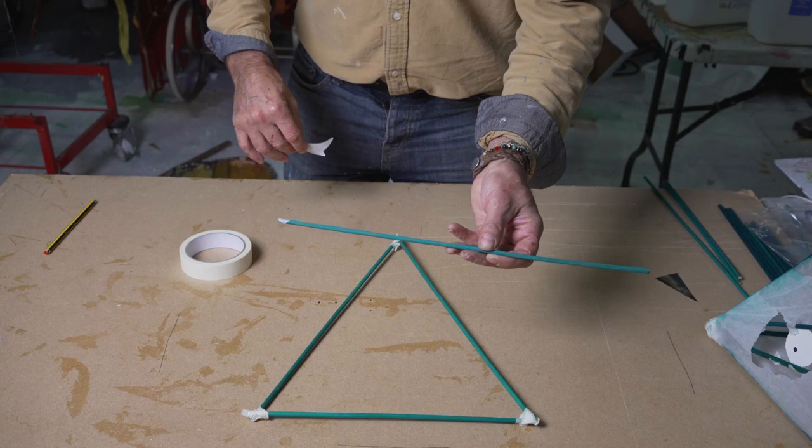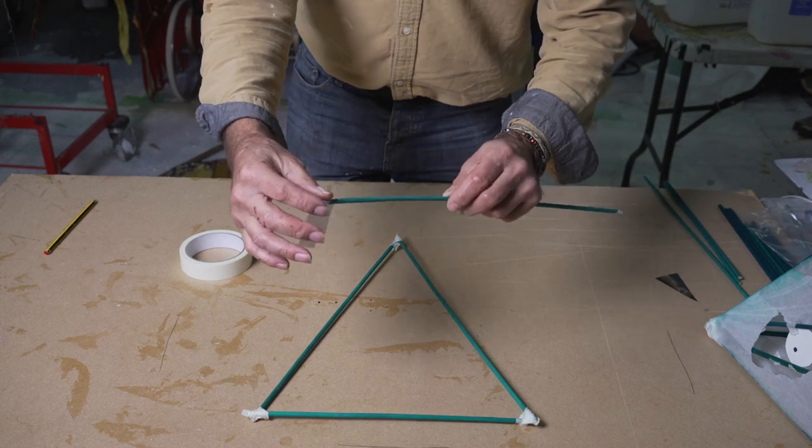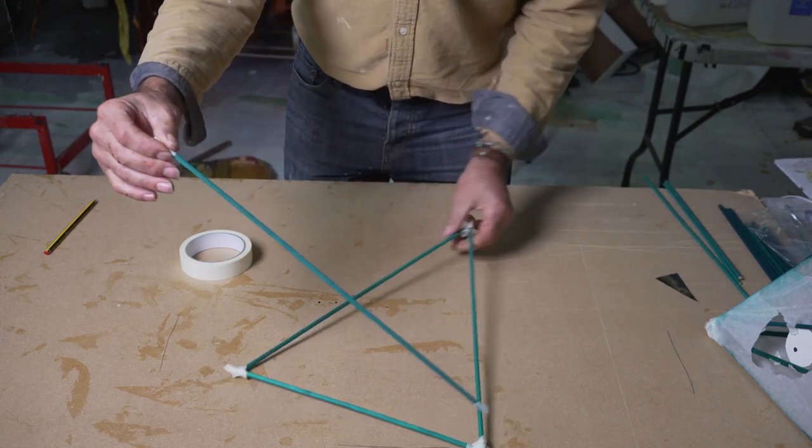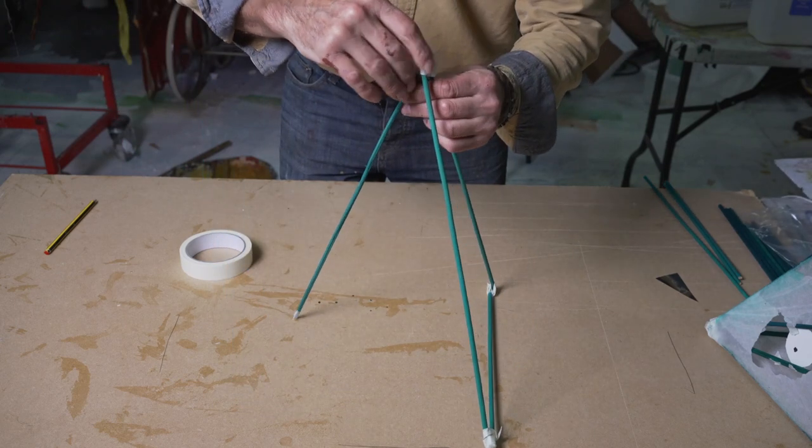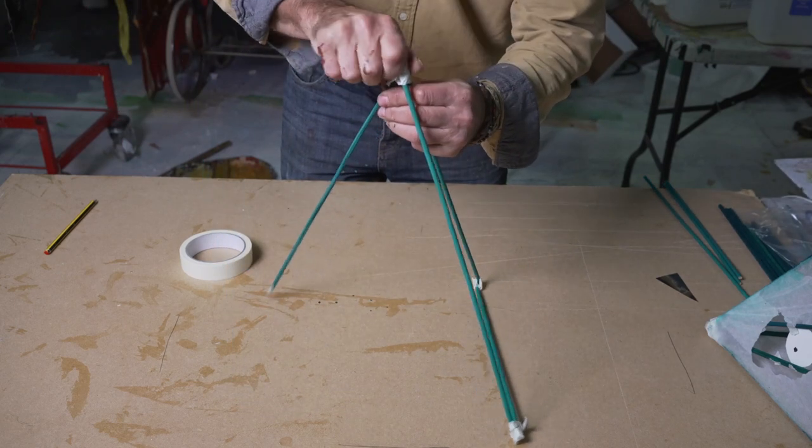Take your third long stick, make that all-important flag on the end with a good squeeze. And then if you stand your triangle like that, you're going to join this to the apex of that first triangle with a tight squeeze.